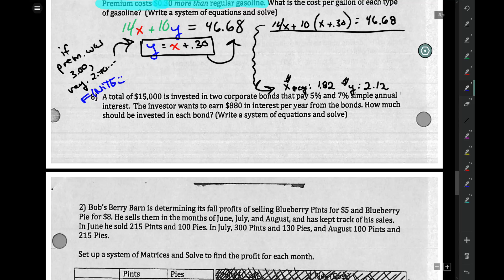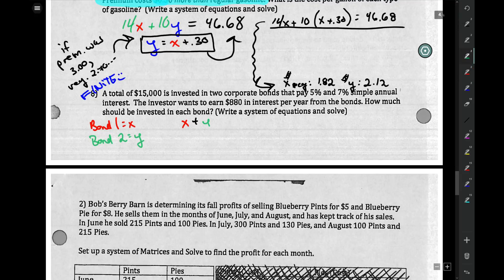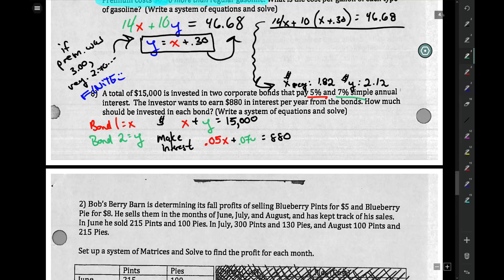A total of $15,000 is invested in two corporate bonds. So bond 1, we'll let you do x, and we'll say bond 2 is y. We have two bonds. And between them, we want to invest $15,000. So that's how much money we have. Now, we want to make, from interest, we want to make $880. Now, how is that made up? Well, that's 5% of our x. So 5% is 0.05 times x, and 7% of our y equals $880.